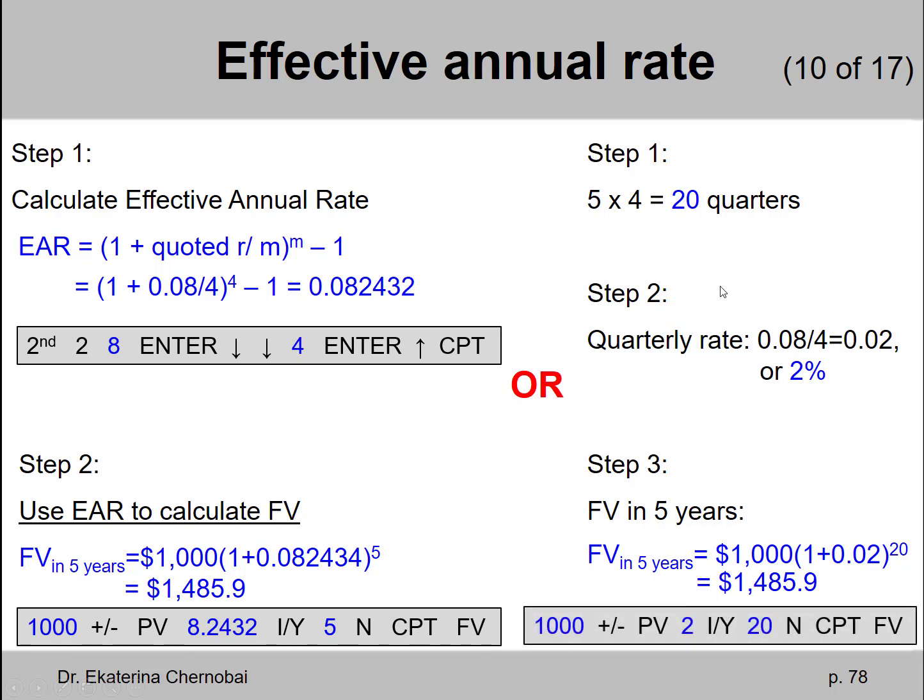So in the second solution you skip calculating the effective annual rate completely. You don't even use it.